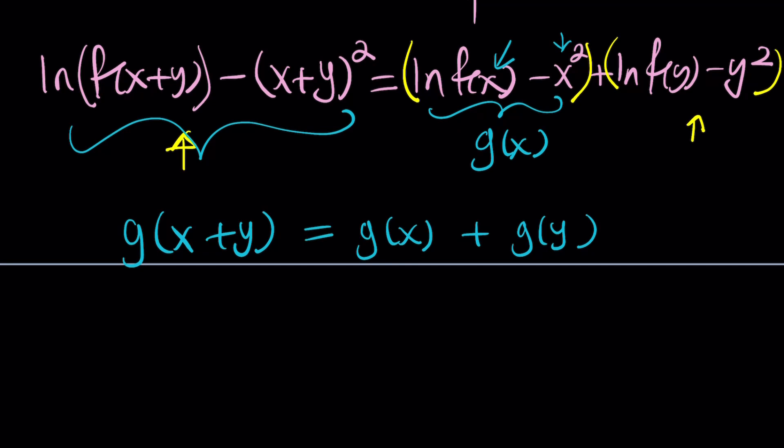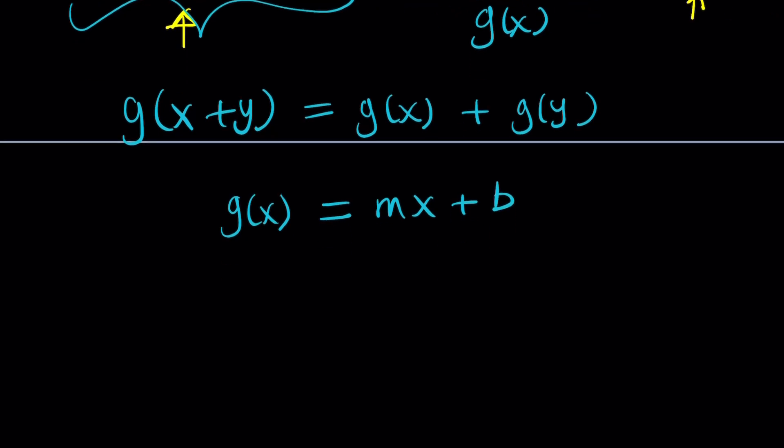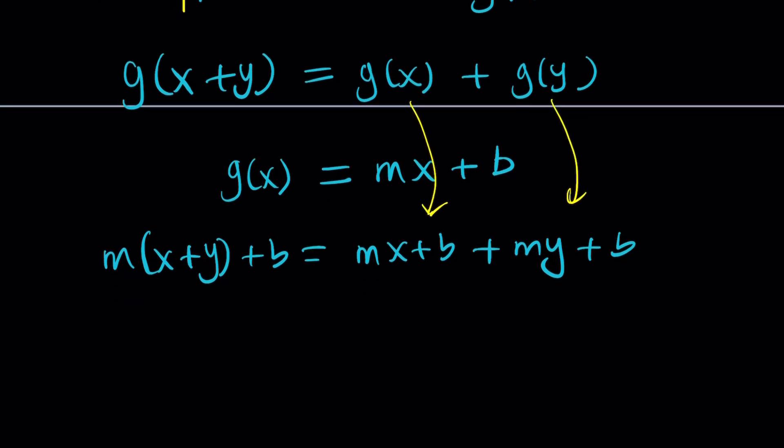And hopefully you do know that this has a solution. Since it's differentiable, it's also continuous, and it'll be solved by g of x equals a linear function. But if you replace g of x with mx plus b and plug it in, you're going to get m times x plus y plus b equals mx plus b plus my plus b. Then b is going to cancel out, one of them, and you're going to end up with mx plus my equals mx plus my plus b. And when these two cancel out, you're going to end up with b equals 0.